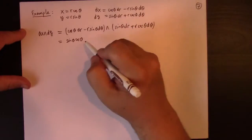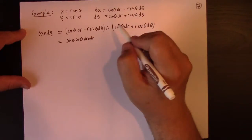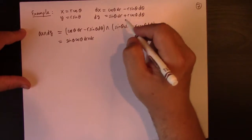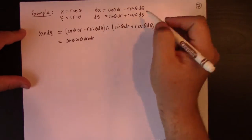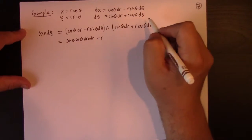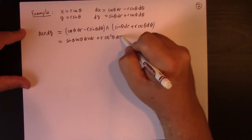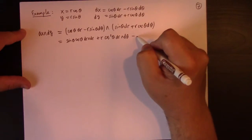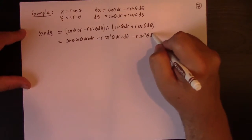Let's see here. I've got a dr which dr is automatically zero. The dr wedge dr is automatically zero. So, why bother writing that? But, oh, well, I did. And then plus R cosine squared theta dr wedge d theta, minus R sine squared theta d theta wedged dr.